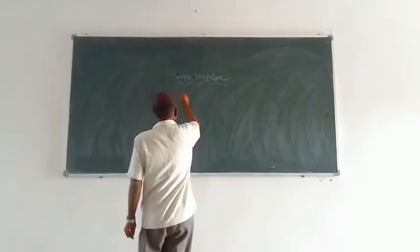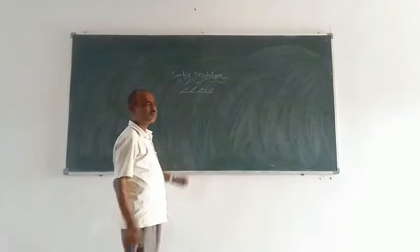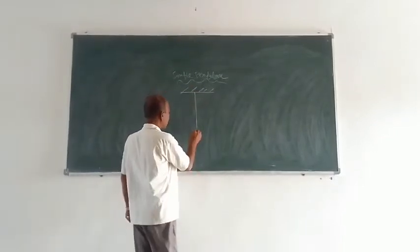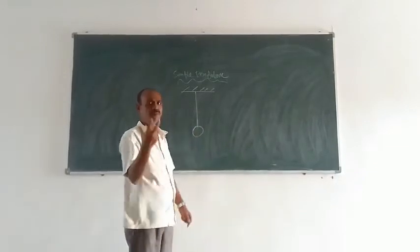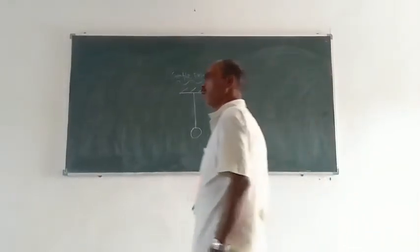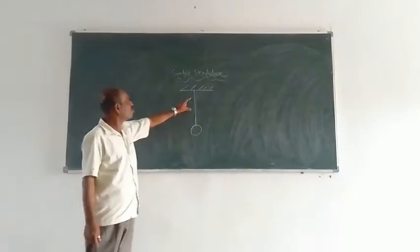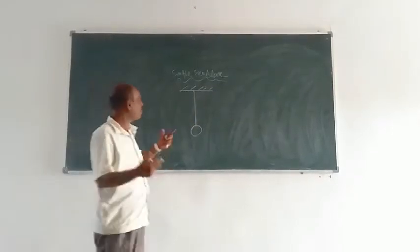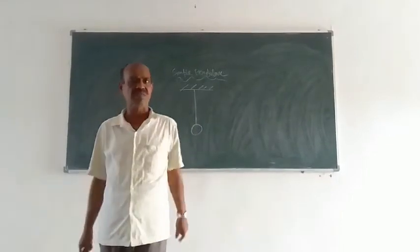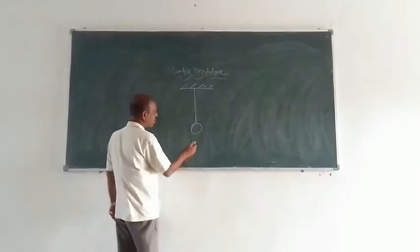So you know that this is actually a simple pendulum. There is one thread, and at the end of the thread there is one spherical mass. For the sake of mathematics, the mass of this thread is neglected, because it is very small compared to the mass of this bob. The mass of this little bob is m.